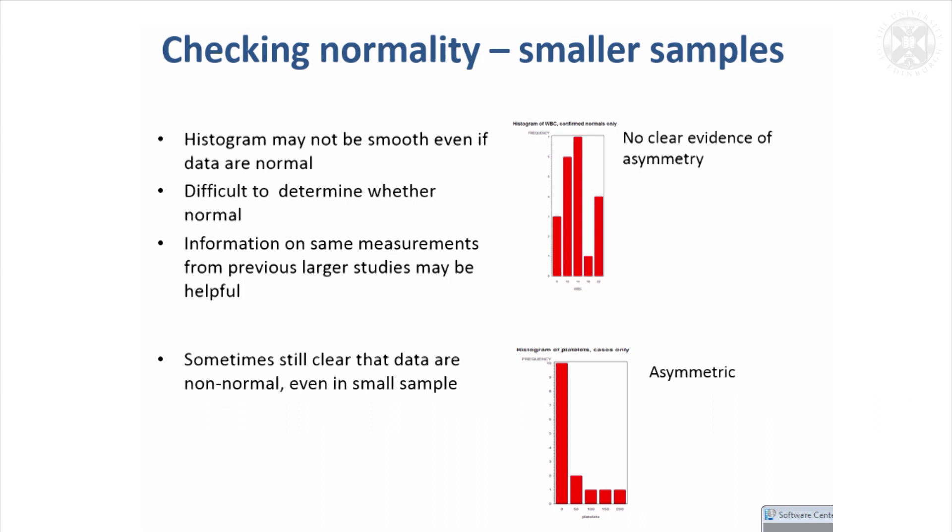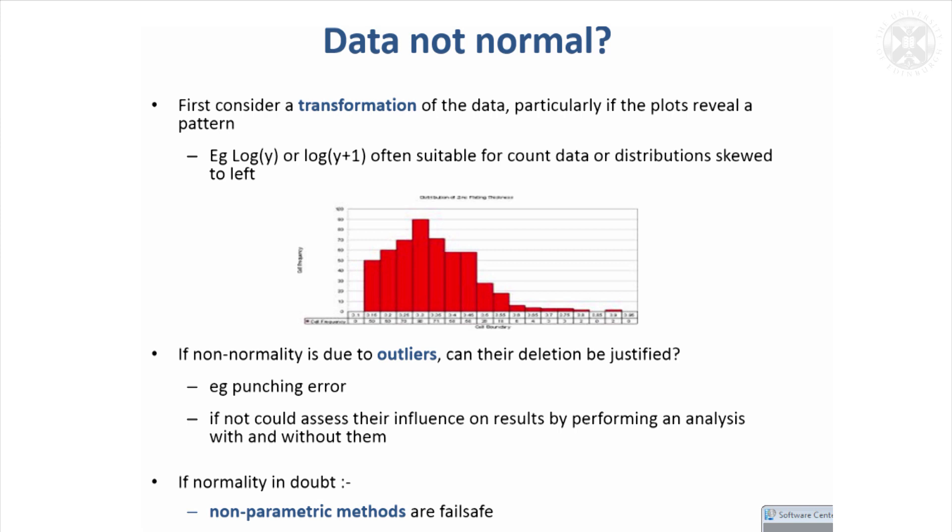Sometimes the data are not normal. Rather than just going straight to a non-parametric test, it's worth trying a few things first. First consider a transformation of the data, particularly if you've got a skewed distribution. For a distribution skewed to the left like this one, if you take the log of the data, or if you've got values of zero, use something like log plus a small value to prevent minus infinite values.